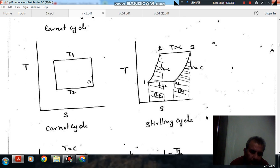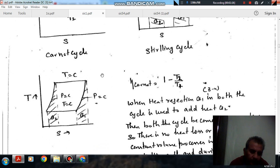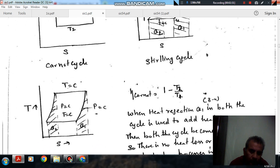So these, this constitutes your Carnot cycle. And the efficiency of Carnot cycle is 1 minus T2 by T1.